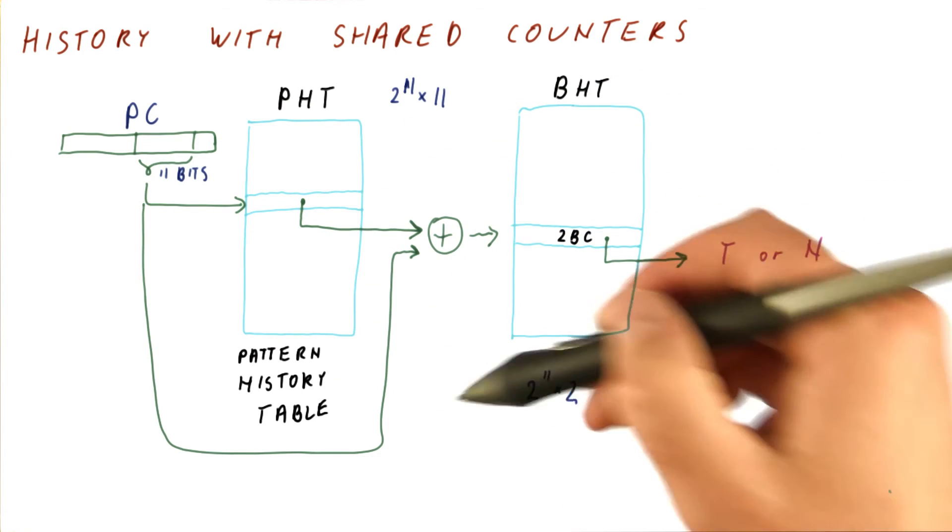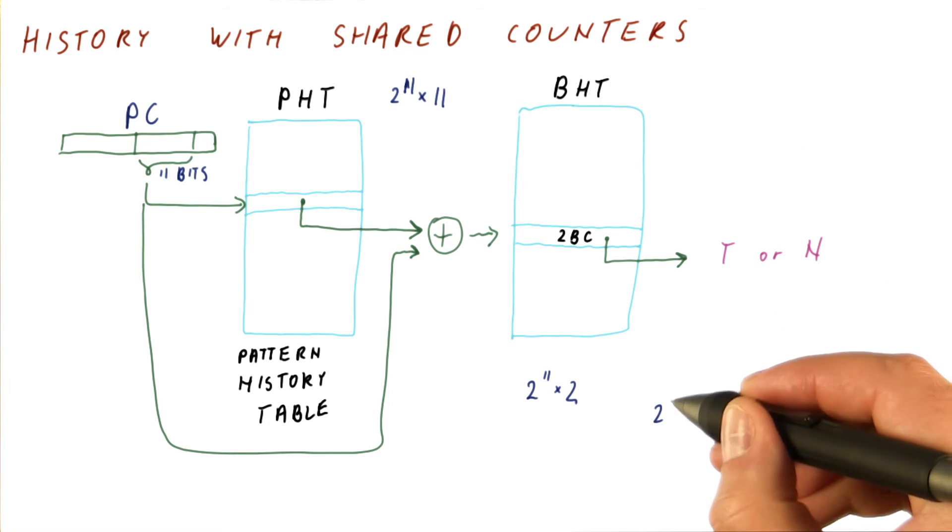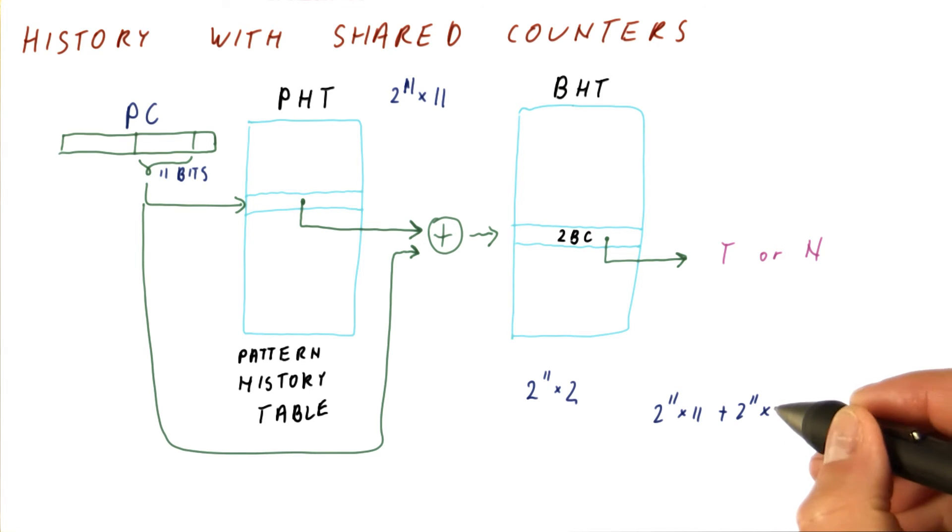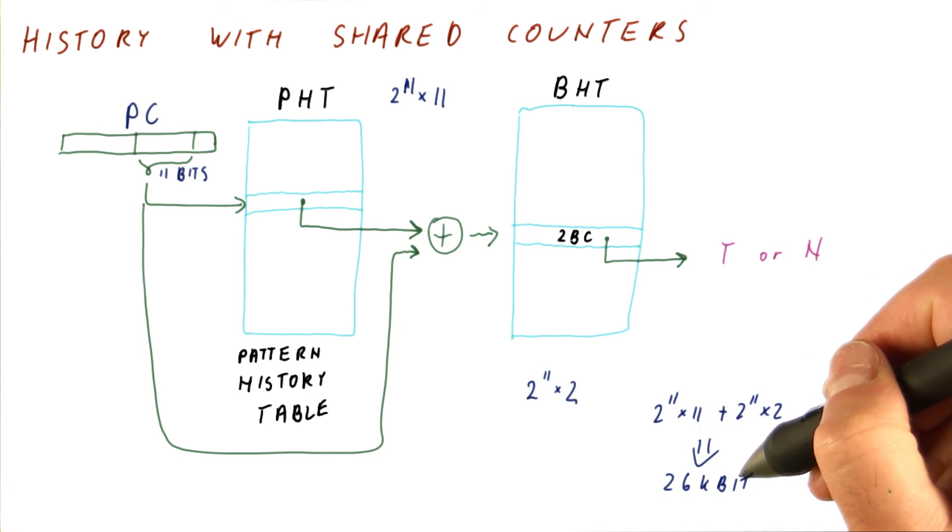So the overall cost of this predictor will be two to the 11th times 11 for the histories, plus two to the 11th times two for the counters, which ends up costing us 26 kilobits.